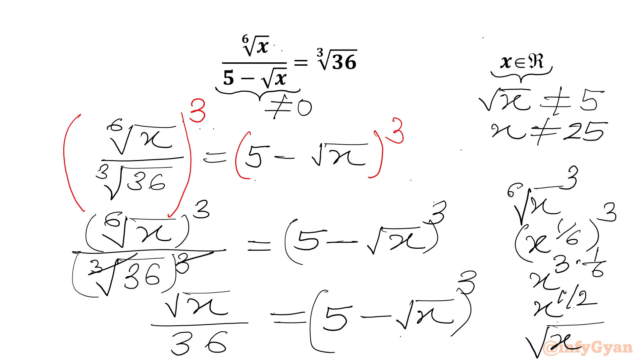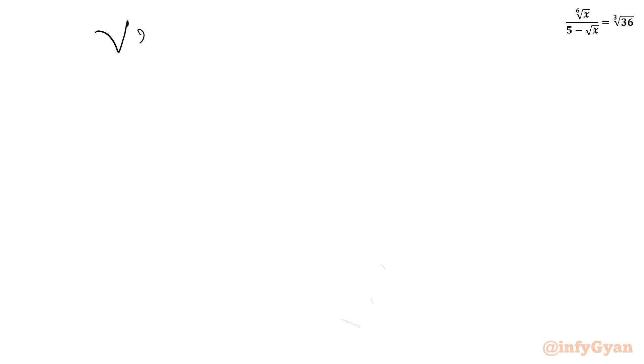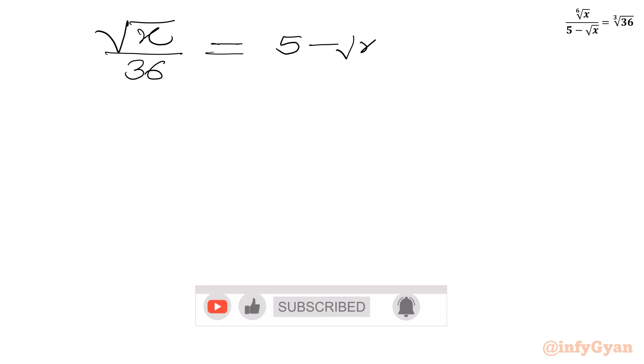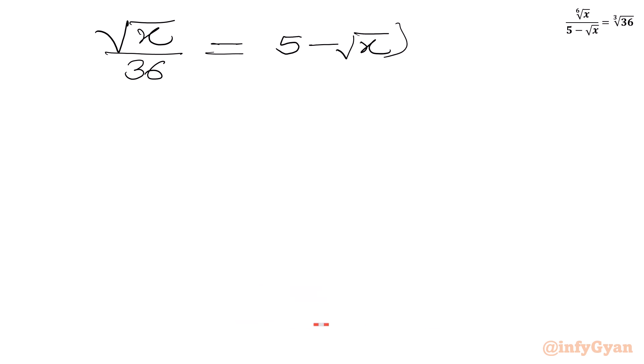So our equation becomes: square root x over 36 equal to (5 minus square root x) whole cube.